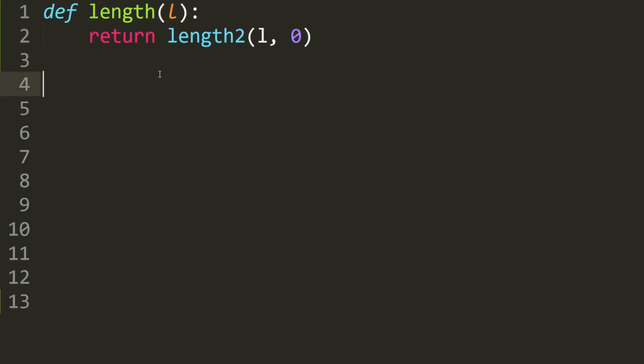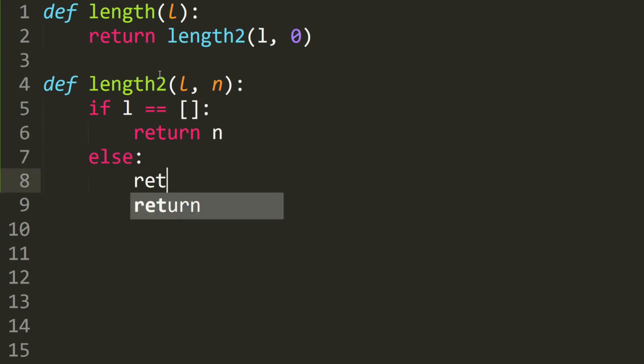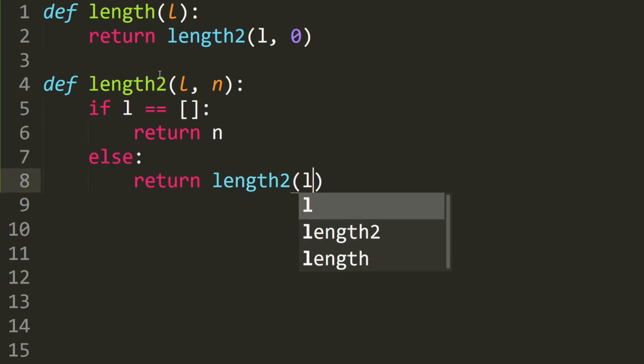Next, we write our length 2. So define length 2. It takes in a list and a number. So if this list is empty, we return whatever n is. Else, we return the length 2. This time, we move on to the next element in the array. And we increment n. So n plus 1.